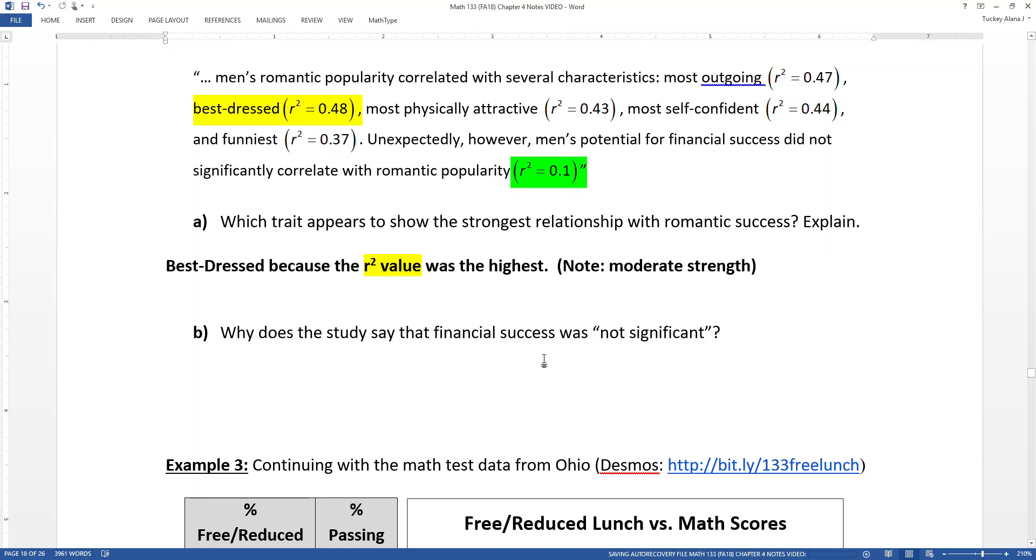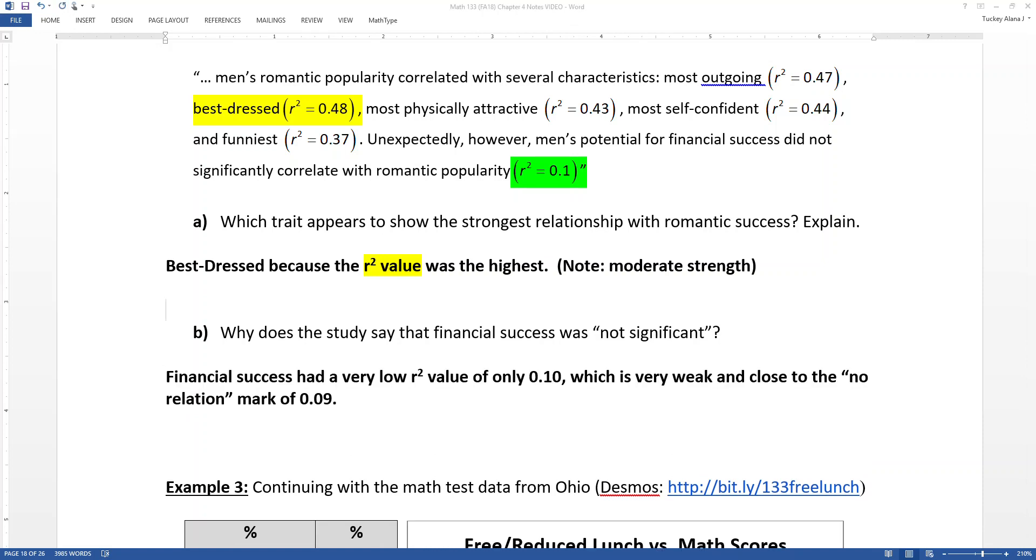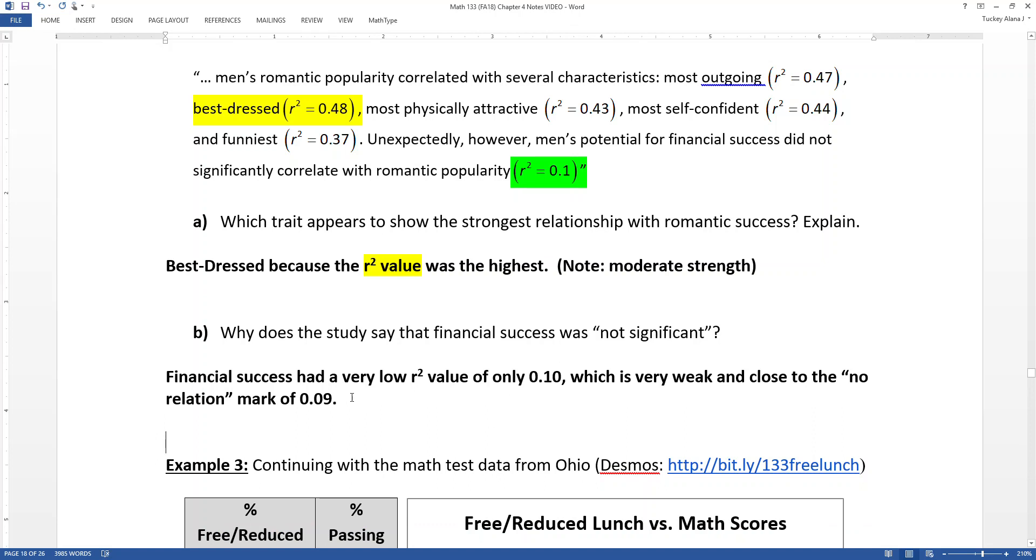And that's because the R-squared equals 0.1 is so close to no relationship at all. 0.09 is the mark for no relation, and we're very close to that mark. So it had a very low R-squared value of only 0.10, which was very weak and close to the no relation mark of 0.09.